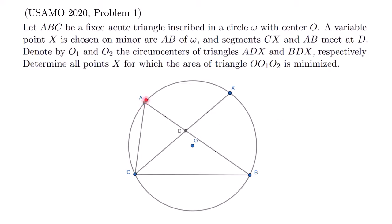For this problem, we have a fixed acute triangle ABC inscribed in a circle with center O. A variable point X is chosen on the minor arc of AB, and segments CX and AB intersect at D.